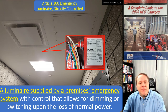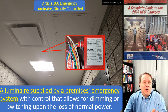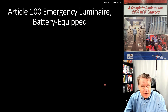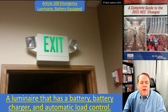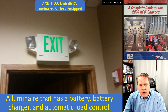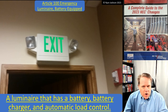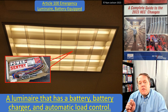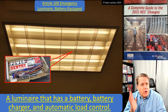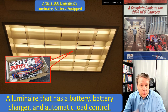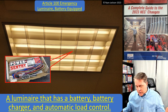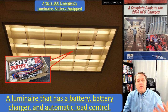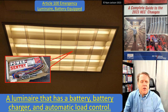It's kind of cool, all the different options we have in lighting control today, especially for emergency illumination — that would be a directly controlled emergency luminaire. We also have a battery equipped emergency luminaire — a new definition that was added. That would be a luminaire that has a battery, a battery charger, and automatic load control. This could be a wall pack, but more likely it's a light like this where it has a battery like an emergency ballast. It's got your normal illumination, your battery, battery charger, and automatic load control, so when the power turns off the battery kicks on and provides the required illumination for up to 90 minutes.